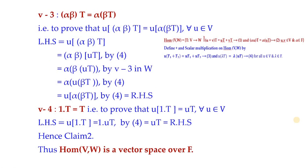For V3, we consider (αβ)T and need to show it equals α(βT). Images must be equal, so we prove u((αβ)T) = u(α(βT)) for all u in V. Considering the left-hand side, by equation 4 we get (αβ)(uT), then using V3 in W. Applying equation 4 and then equation 4 again, we obtain the right-hand side, proving V3.